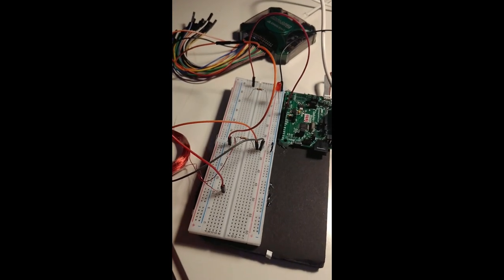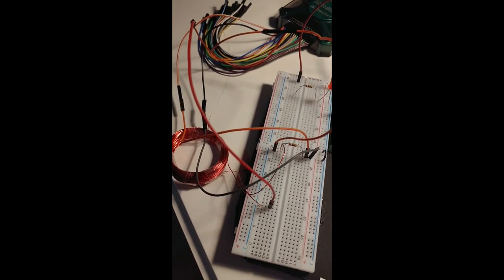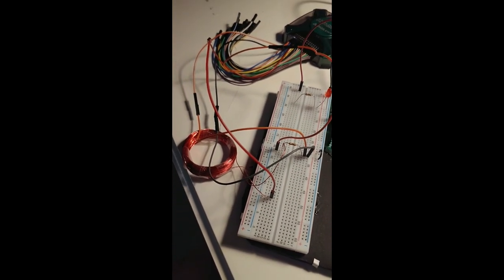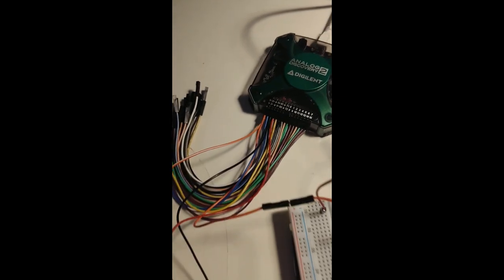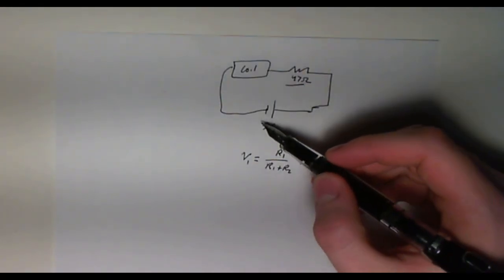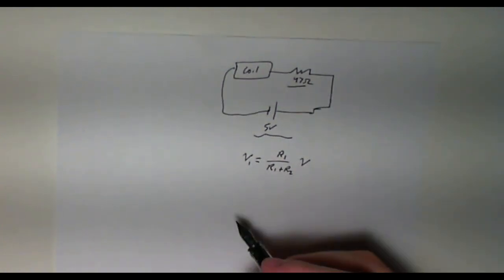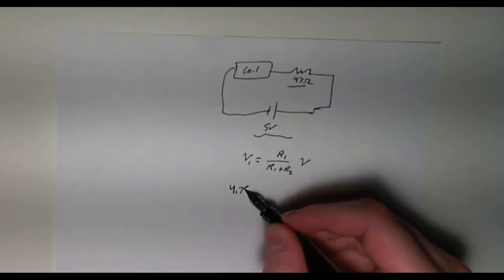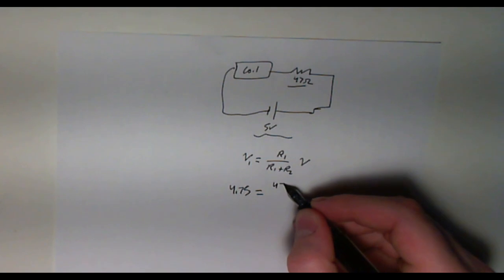We've hooked up the coil in series with a 47 ohm resistor and put a 5 volt supply into it using the analog discovery module. This is clearly a voltage divider. So I put 5 volts in and measured the output to be 4.75 volts across the 47 ohm resistor.